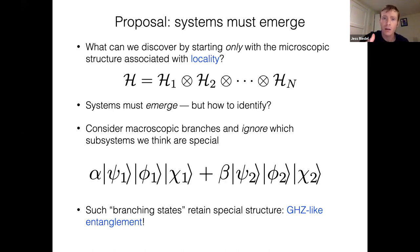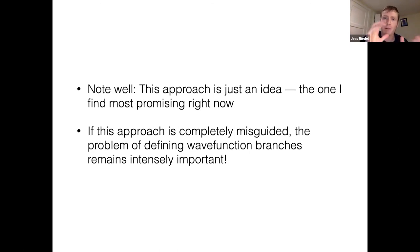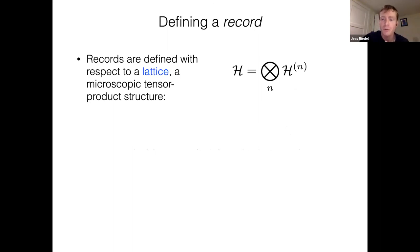This approach is an idea for trying to define branches — the one I personally find most promising right now. This could be totally misguided. But I'm going to hopefully argue that the problem of defining branches remains intensely important. Even if you think this is totally wrong, you should still care about branches. So now I'm going to introduce the idea of records and then redundancy. These are ideas that originally came out of quantum Darwinism, and we're going to try to abstract them and give them a way to be defined when we don't have access to a preferred system and are only thinking about a lattice.